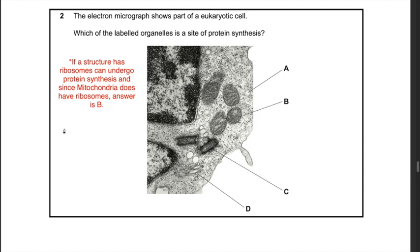Question 22: which of the labeled organelles is a site of protein synthesis? Protein synthesis occurs at ribosomes; both chloroplasts and mitochondria have ribosomes and can undergo protein synthesis due to their own DNA and ribosomes. In this electron micrograph of a eukaryotic cell, structure B represents the mitochondrion. Since mitochondria have 70S ribosomes, they can undergo protein synthesis. Hence the answer is B.